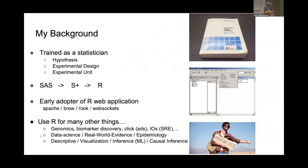And we'll go back to those later. I began my career with SAS, then at some point S-Plus and R. I consider myself an early adopter of R web applications, so I was playing with technologies such as Rook, brew, web sockets, even before Shiny was a thing. I used R for many other things: genomics, biomarker discovery, data science, real-world evidence, epidemiology. But at the end of the day, what I'm doing is descriptive, visualization, inference, machine learning, and causal inference — mostly thanks to R.